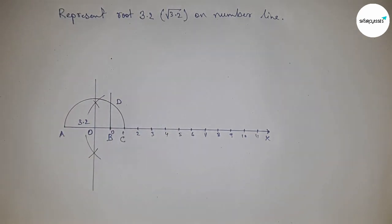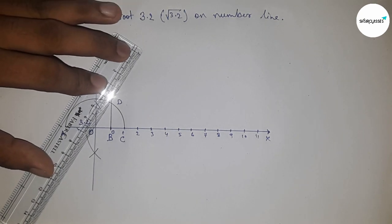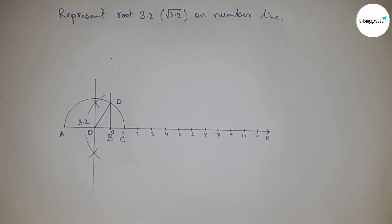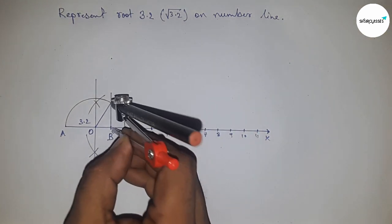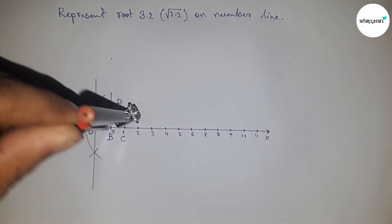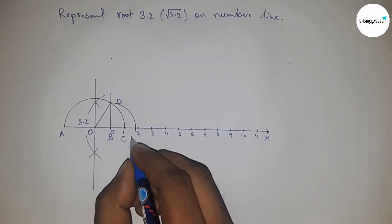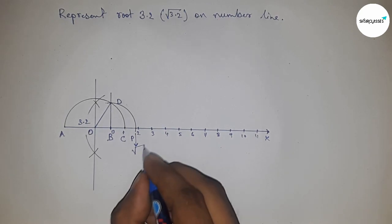Next, join O and D. Now take the distance BD with a compass and draw an arc which meets the number line at point B. This is the representation of root 3.2 on the number line.